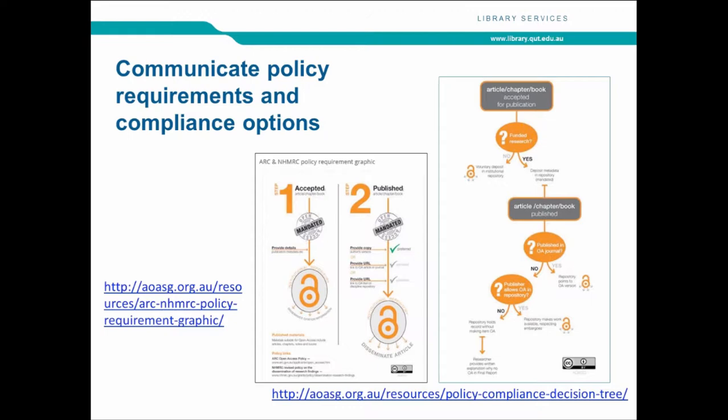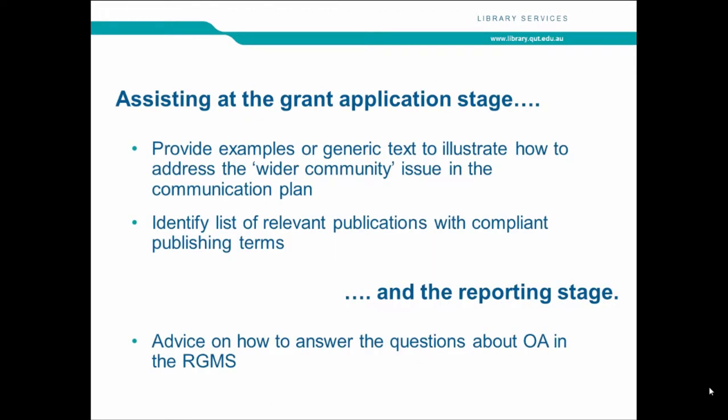The Australian Open Access Support Group has created useful graphics we can use as part of a communication plan to send out to researchers when we hear they've got a new grant. At the application stage, we can provide assistance such as generic text they can customise for the section on communicating results to the wider community, and possibly identify a list of relevant publications in their area that would be compliant with grant rules. We may also get questions about how to answer questions in the research grant management system, as much of the compliance is built in — when submitting the final report, they have to tick some checkboxes.